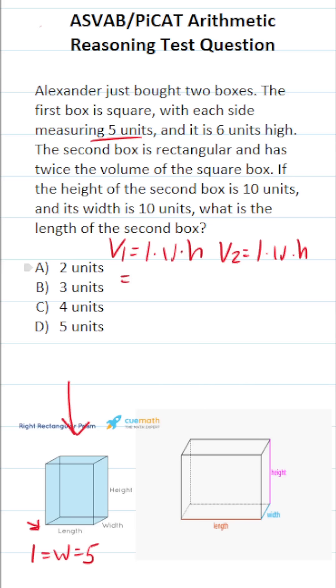So this becomes five times five, and its height is six units. Let's go ahead and find the volume of the first box here. Five times five is going to be 25. 25 times six is going to be 150. So the volume of our first box is 150 cubic units.